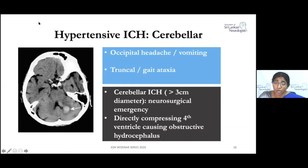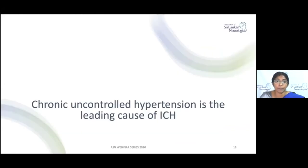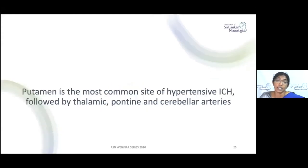Compared to other areas, surgical emergencies most commonly arise from cerebellar hemorrhages. A cerebellar hemorrhage greater than 3 cm in size may require urgent neurosurgical consultation, because the hematoma can block the fourth ventricle and cause obstructive hydrocephalus. Chronic uncontrolled hypertension is the leading cause of ICH, and the putamen is the most common site of hypertensive bleed, followed by thalamic, pontine, and cerebellar locations.